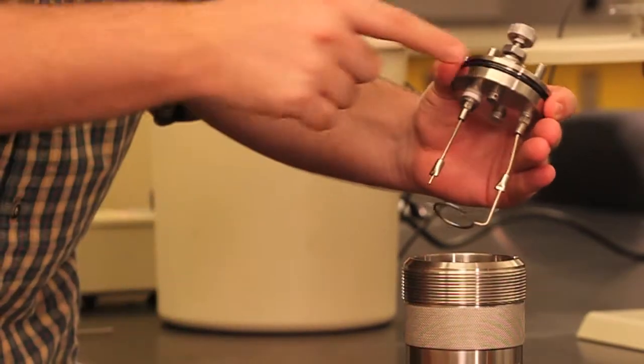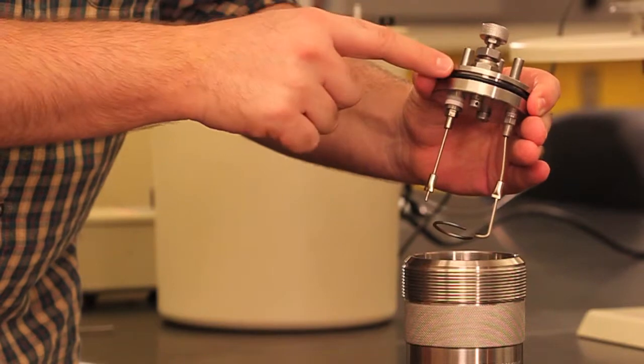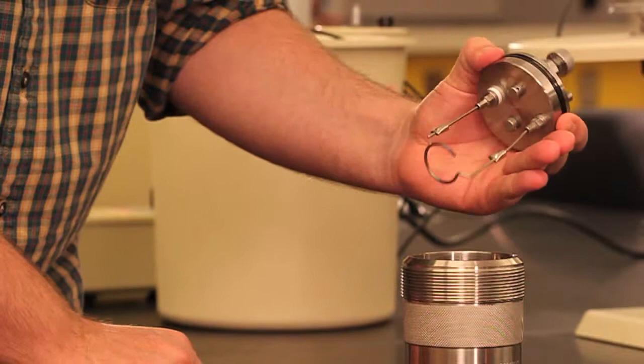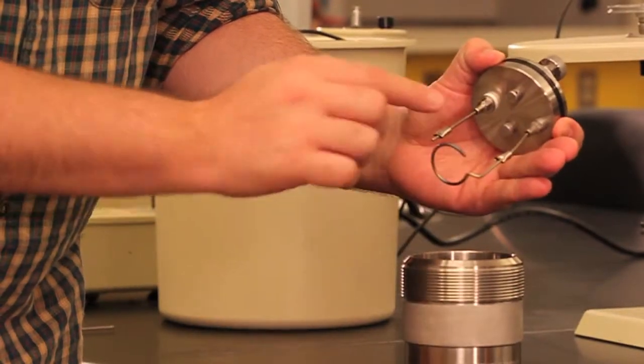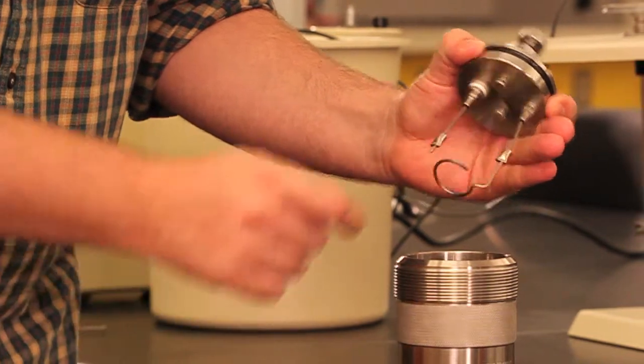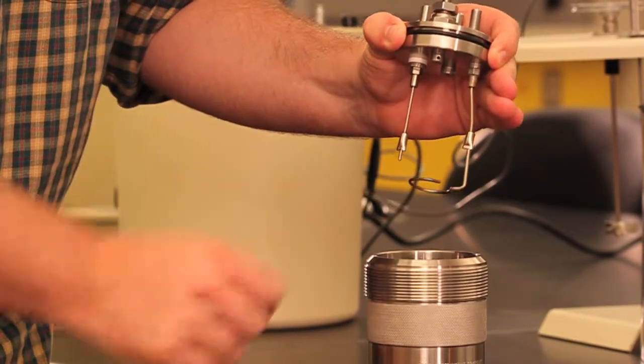You will notice there is an O-ring around the top. This O-ring is used to make a gas-tight seal in the bomb. The electrical feed-throughs and the gas inlet can be seen on the underside of the top. One of the electrical connections is bent into a circular shape. This is where the sample cup will sit.